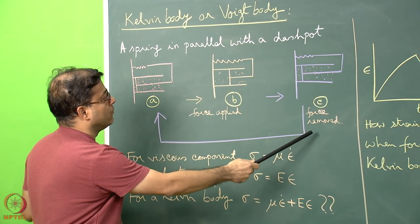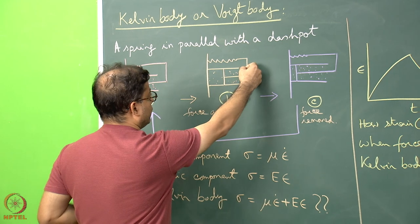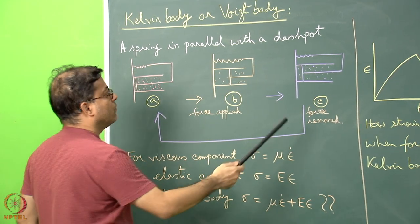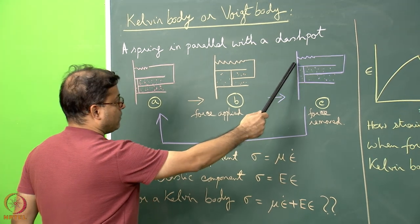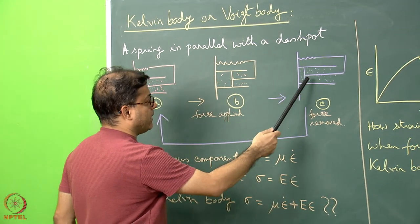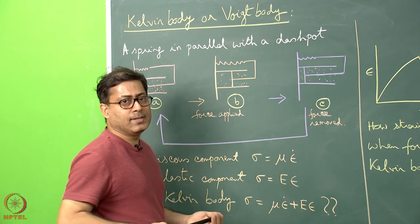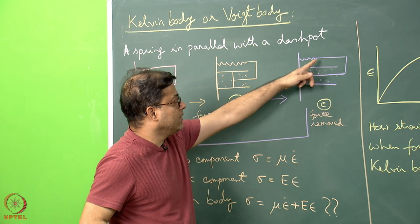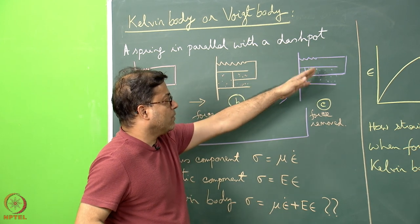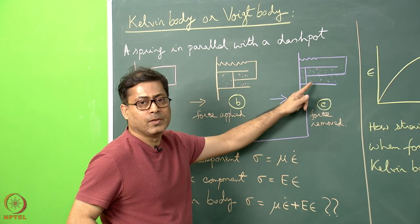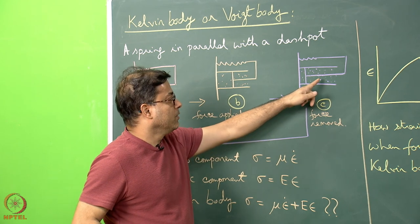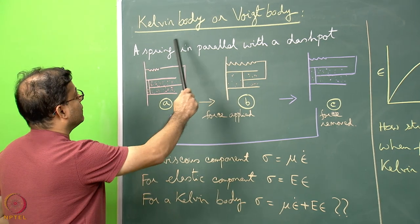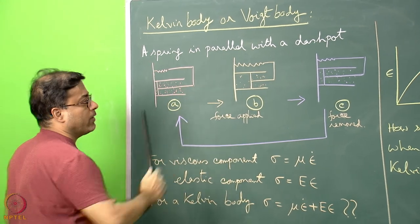Once the force is removed, the spring will try to come back to its initial position and the piston will also move back. But it will not be a free and easy movement — its tendency to move backward will be damped by the viscous component of deformation. This is the situation in which the Kelvin body or Voigt body deforms.